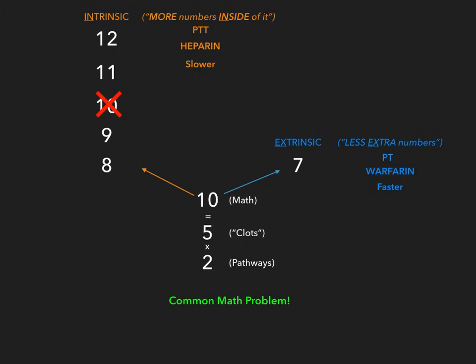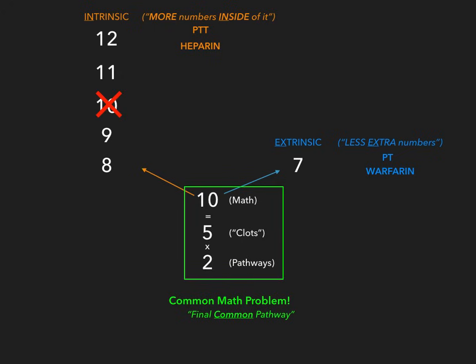Our common math problem — factors 10, 5, and 2 — represents the final common pathway. If you were to disrupt factor 10, factor 5, or factor 2, both the intrinsic and extrinsic pathways would be affected because both pathways lead to the final common pathway. In the intrinsic pathway, factor 12 is generated, then 11, 9, 8, and then 10, 5, and 2. In the extrinsic pathway, factor 7 is generated, then 10, 5, and 2.